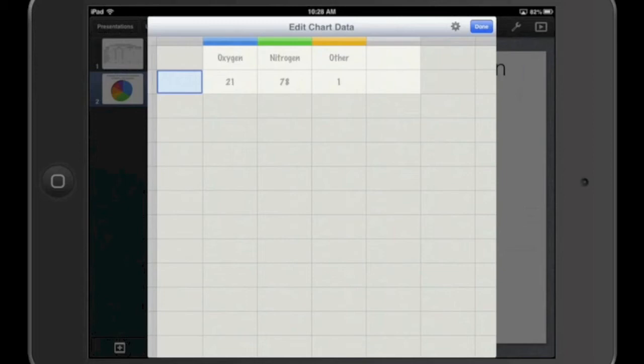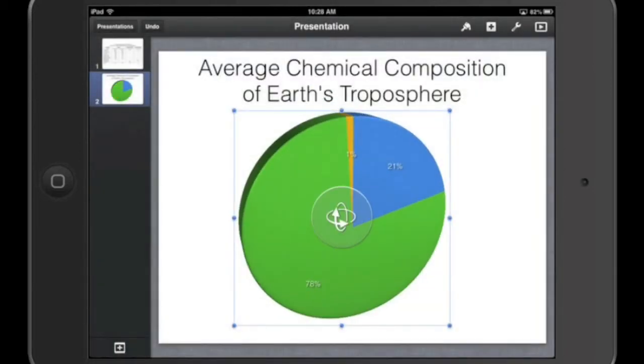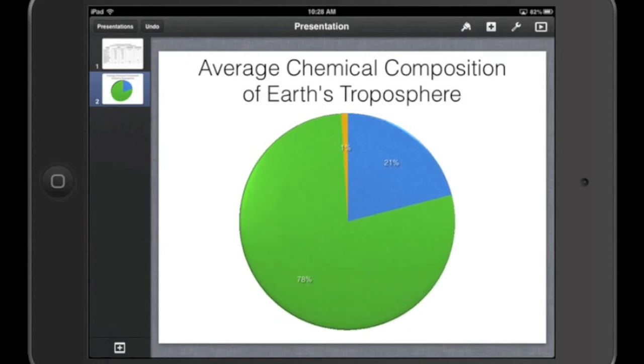And so there's my data, very simple. I'm actually going to go ahead. All right, perfect. So now I can hit Done, and there is my data in form of a beautiful pie chart.